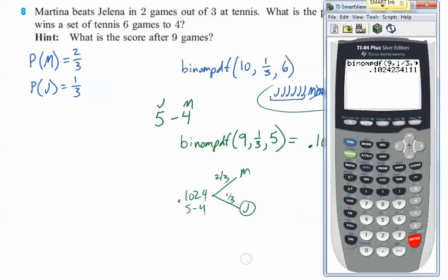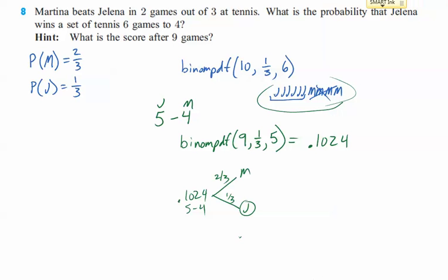And so, I'm going to take that number that I had before and I'm going to multiply it by one over three. And, obviously, I don't need that. So, when I push enter, it will actually give me an answer, which is 0.0341. So, the final probability is 0.0341.